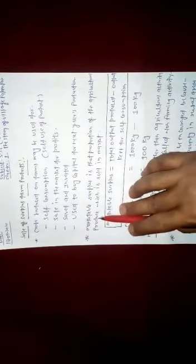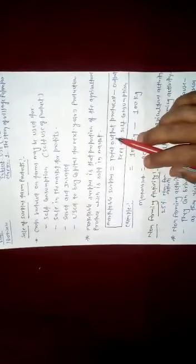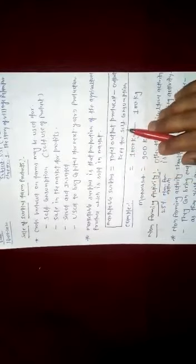Marketable surplus is that proportion of the agricultural produce which is sold in the market. The excess quantity is sold out, and some part of that produce is consumed by the farmer themselves.